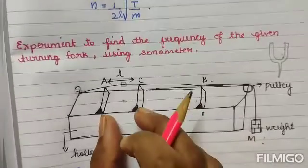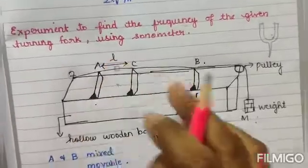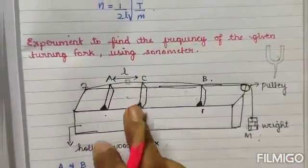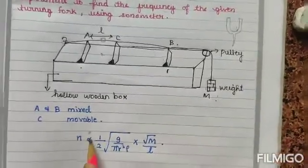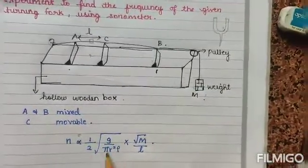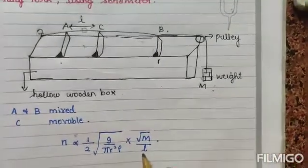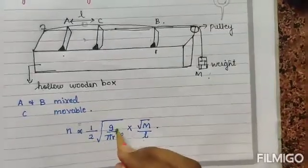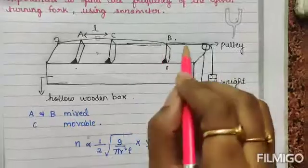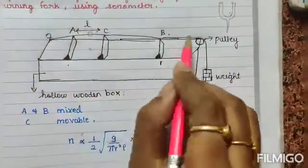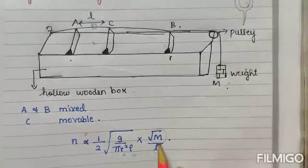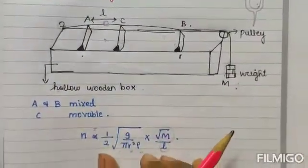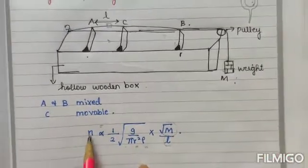We calculate the distance between the two knife edges — that is L. Then we substitute into the formula: n = (1/2) × √(g / π r² ρ) × √(m/L), where g is gravity, r is the radius of the string, ρ (rho) is density, m is the added weight, and L is the resonant length.